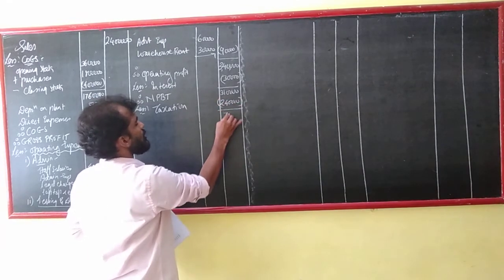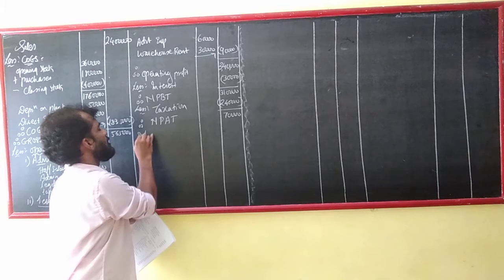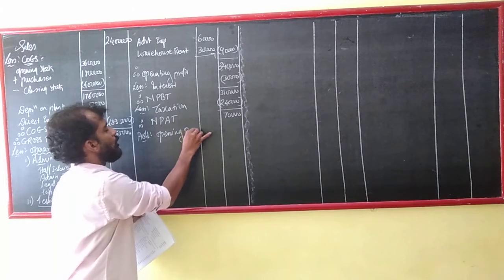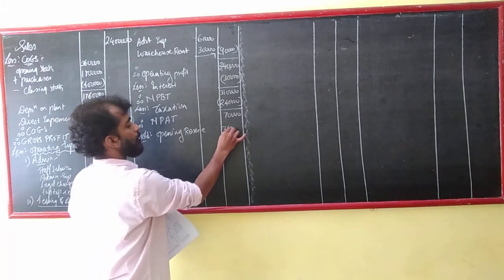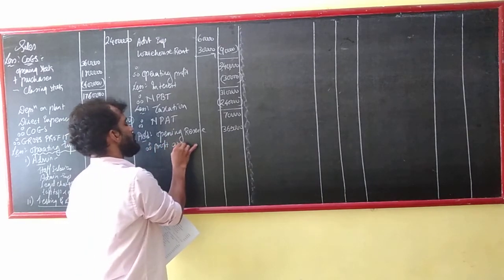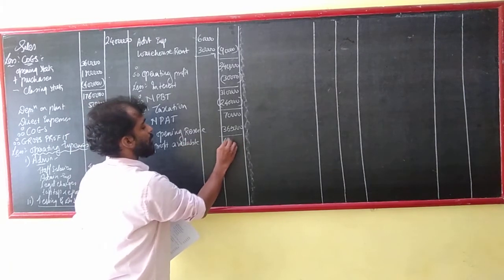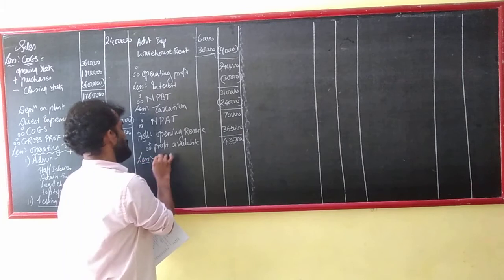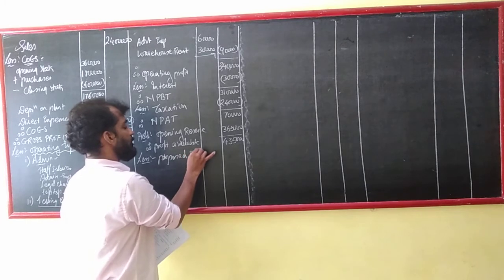That means my profit for the year — NPBT — is how much? 70,000. Add 20,000. And then opening reserve. Opening reserve — they have said 3,65,000. That means my profit available for equity shareholders. 4,35,000. They have said proposed dividend 3,45,000. That means my retained profit.